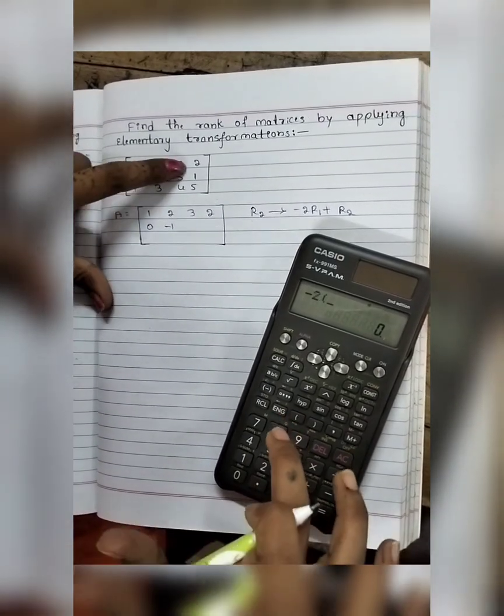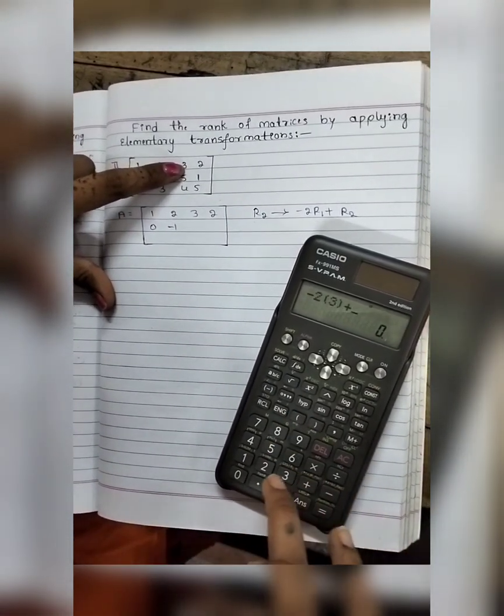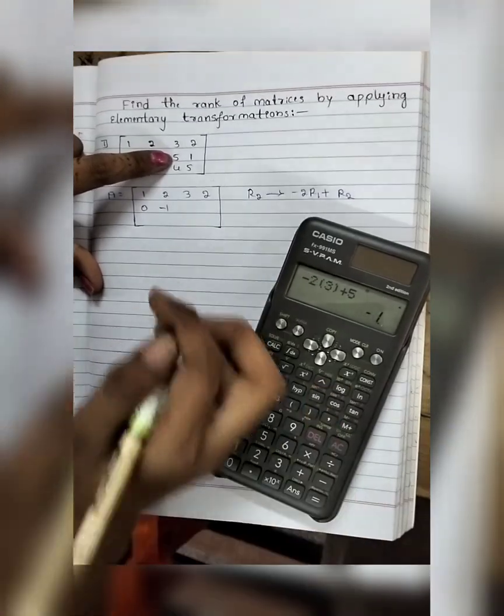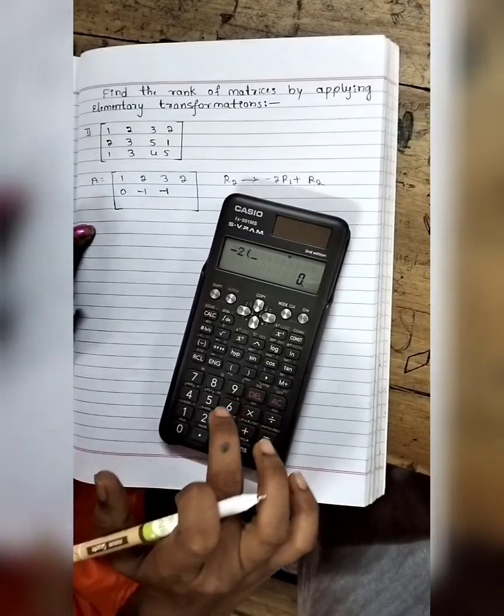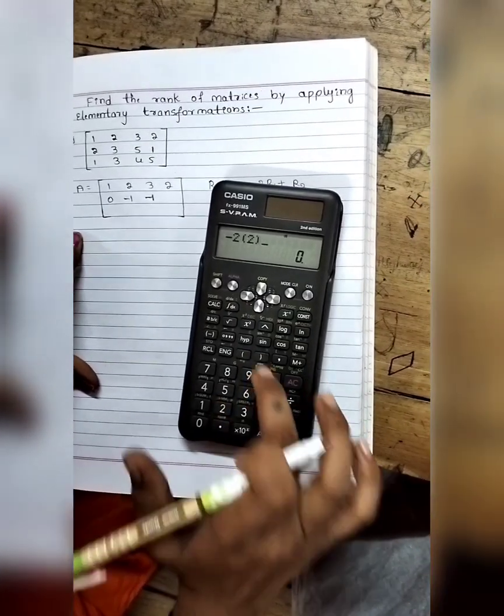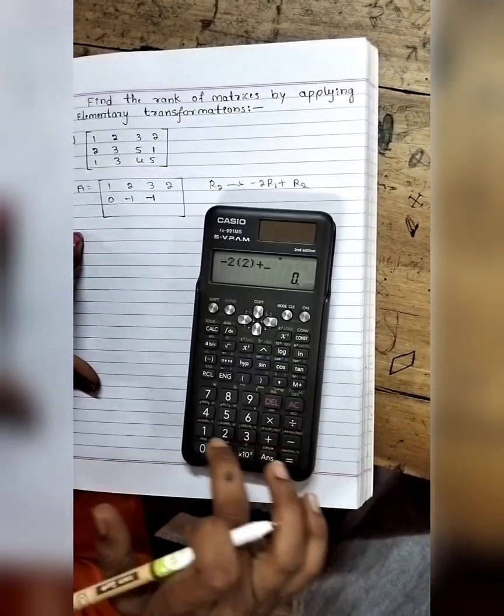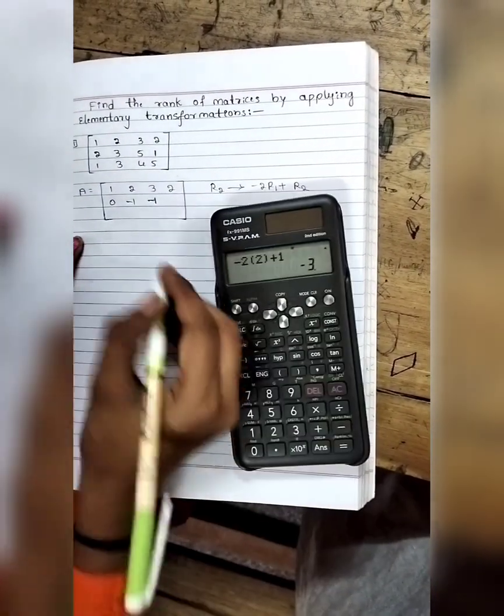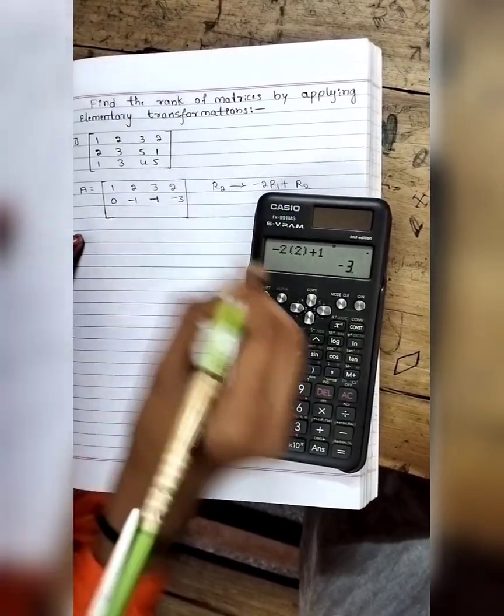Minus 2R1 plus R2. Minus 2 into 3 plus 5 gets minus 1. Next, minus 2R1 plus R2, so minus 2 into 2 plus R2 is 1, we get minus 3.